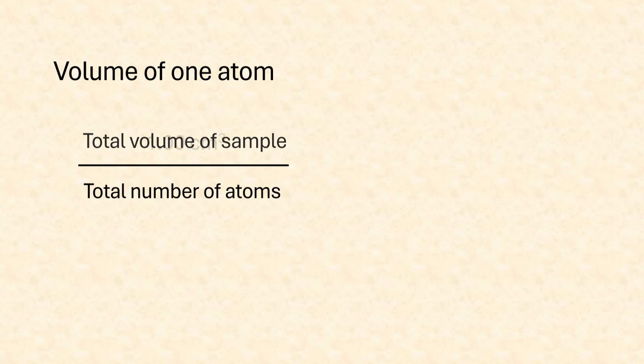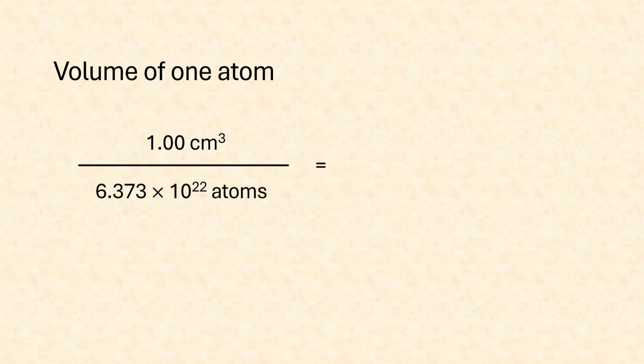Step 3 is to use your answers from the first two steps to determine the volume of one atom. All you have to do is take the total volume of the metallic sample from step 2 and divide it by the total number of atoms from step 1. The quotient will be the total volume of one atom in cubic centimeters.